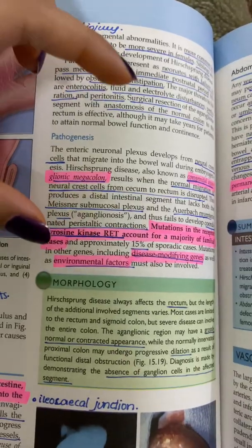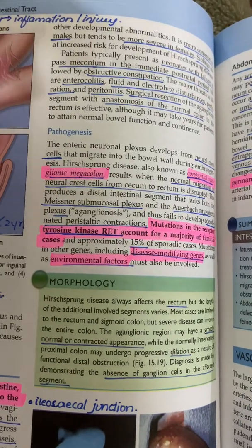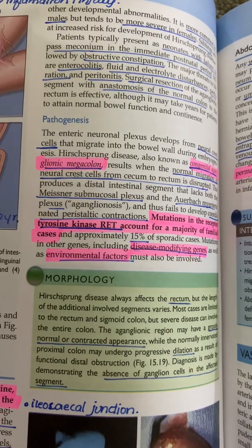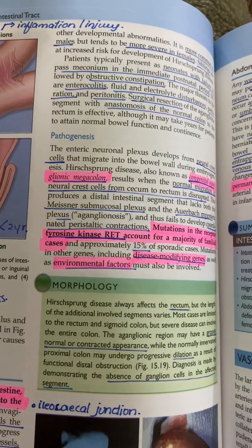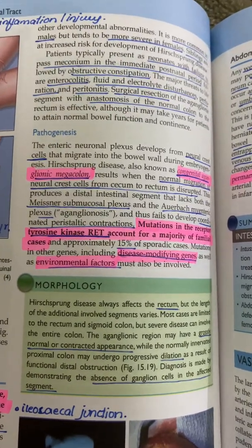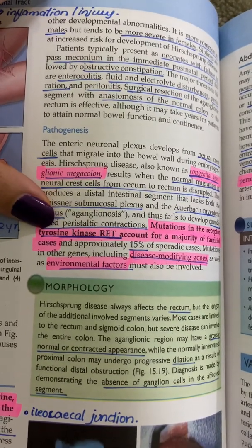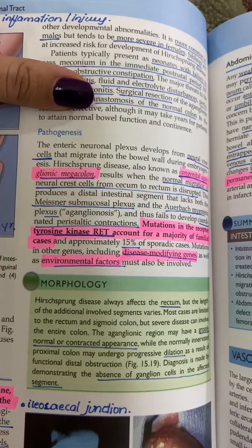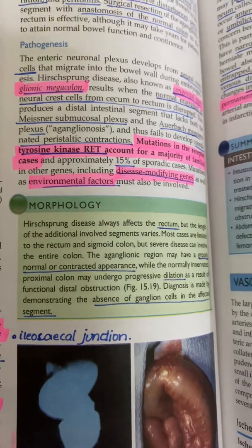The pathogenesis of Hirschsprung's disease involves the enteric neuronal plexuses, which are normally formed by neural crest cells. If these neural crest cells fail to migrate into that area, it leads to this disease, also known as congenital aganglionic megacolon. In the affected segment, there will be neither submucosal plexuses nor myenteric plexuses, leading to uncoordinated peristaltic contractions. Mutations occur in the RET tyrosine kinase gene, and disease-modifying genes or environmental factors may also contribute.